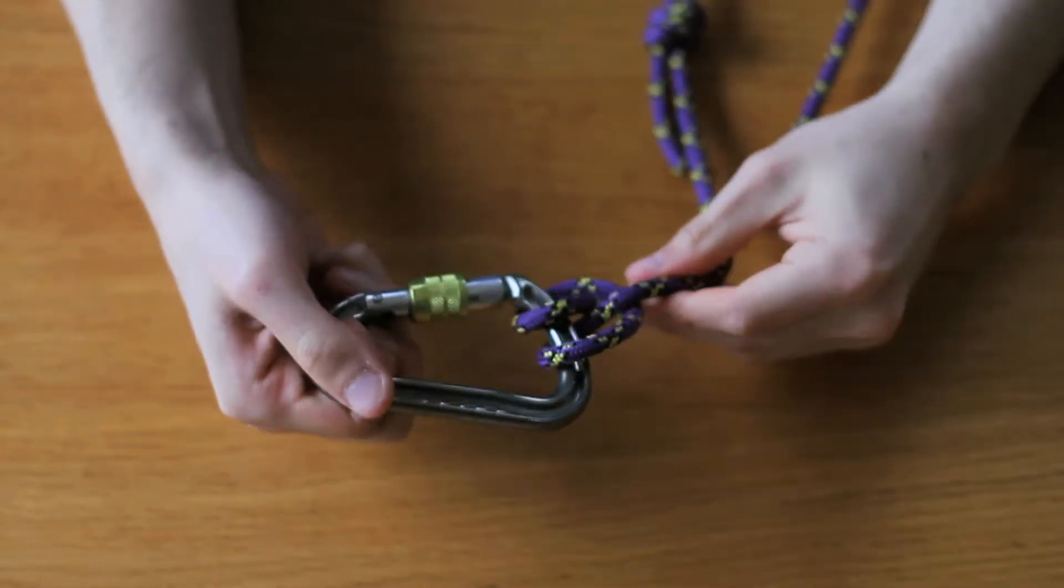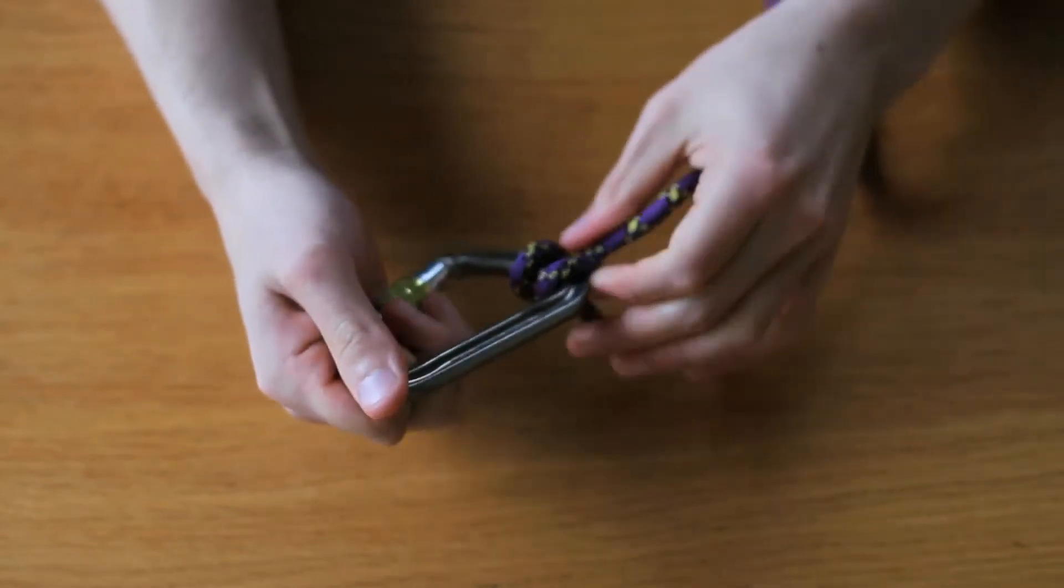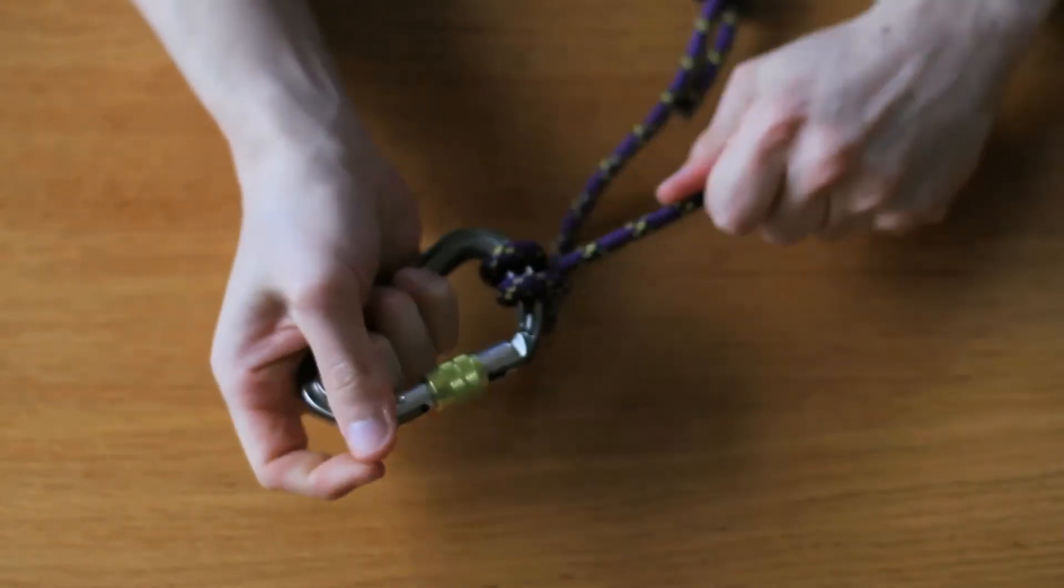So what's good about this? Well, firstly if you were to load one tail of the clove hitch it locks. And the same thing for the other side.